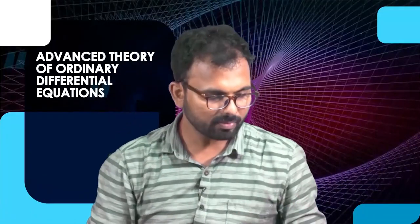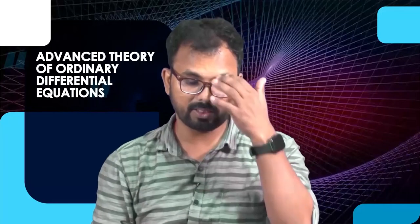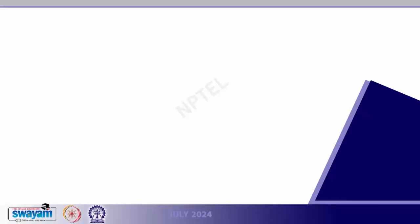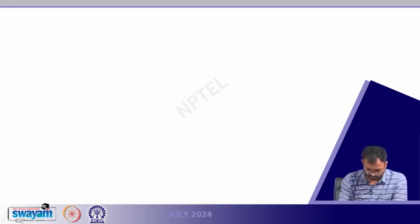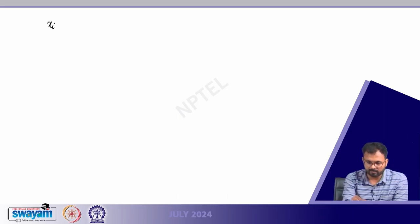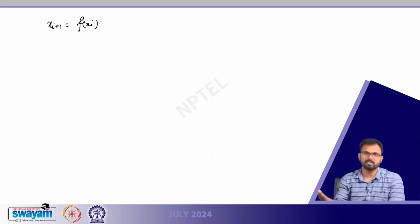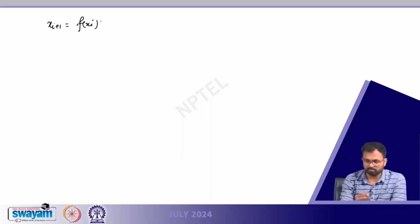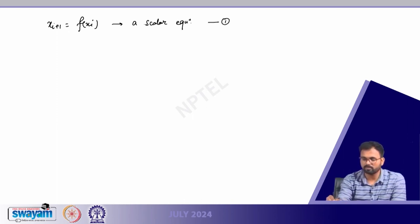To give the definition, we start with the iteration equation that we always have: dx/dt = f(x). This is a scalar equation — let us call it equation number 1.